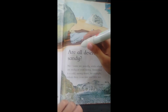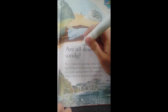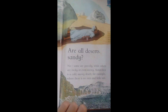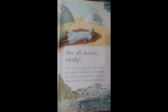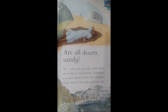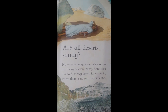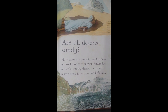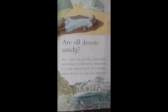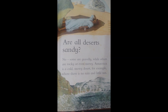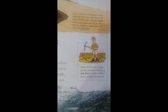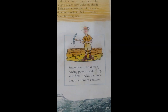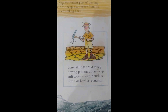Are all deserts sandy? No — some are gravelly, while others are rocky, or even snowy. Antarctica is a cold, snowy desert, for example, where there is no rain and little sun.